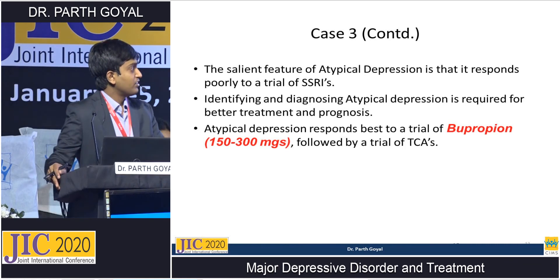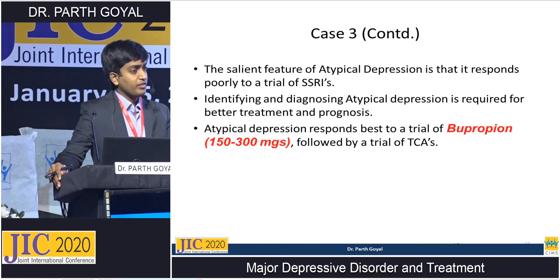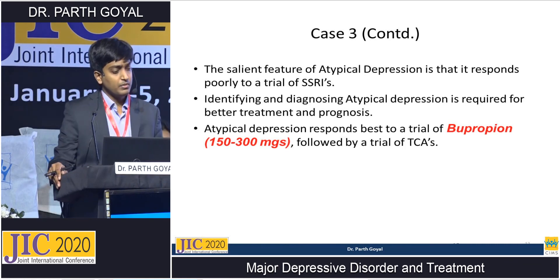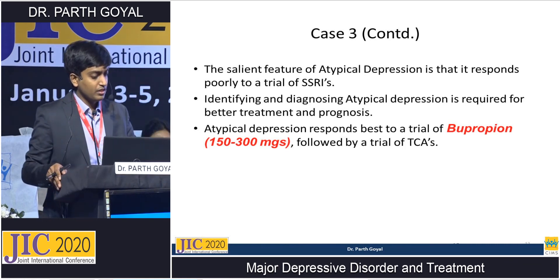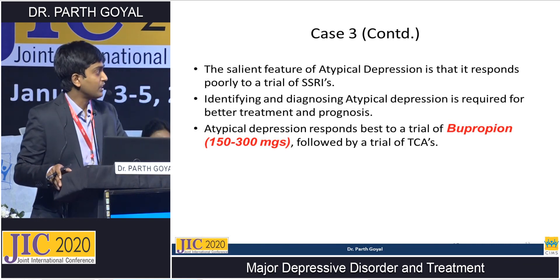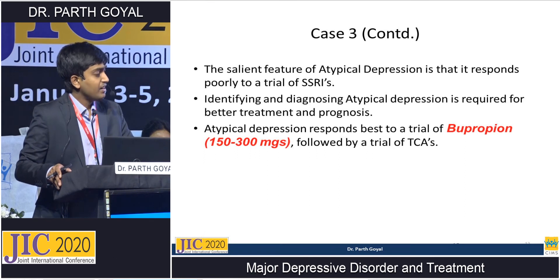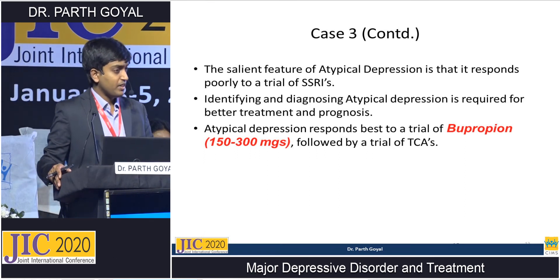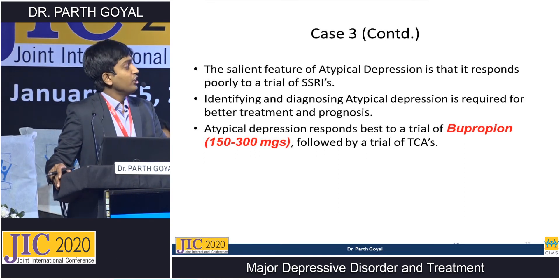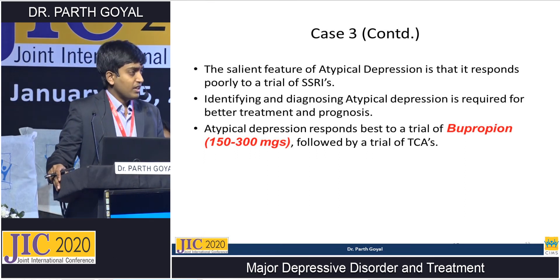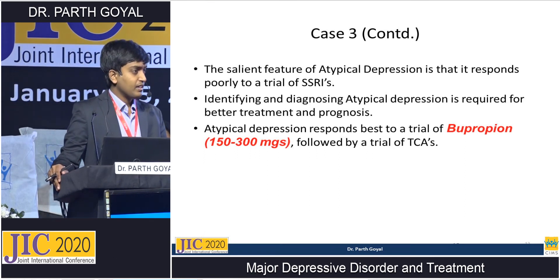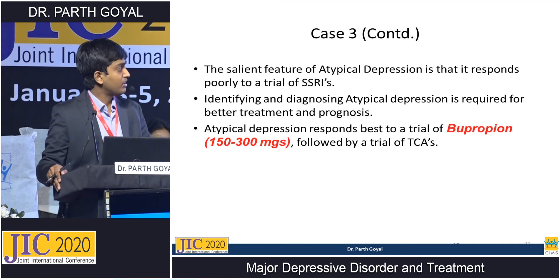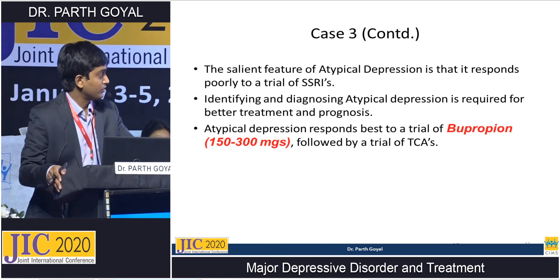The patient was given a trial of bupropion, starting at 150 mg and titrated up to 300 mg as monotherapy, and responded very well. You could also give a trial of tricyclic antidepressants; however, it is advisable to give bupropion first.